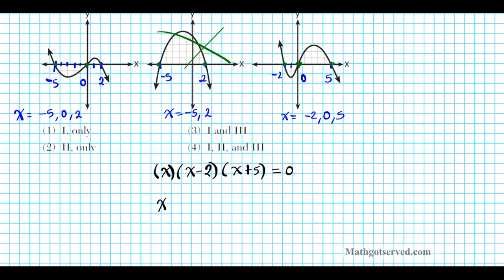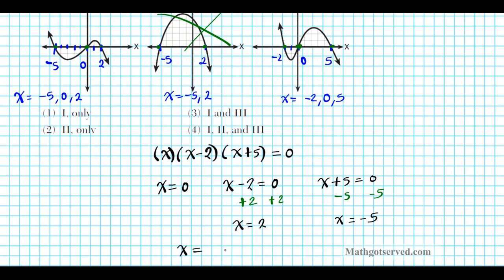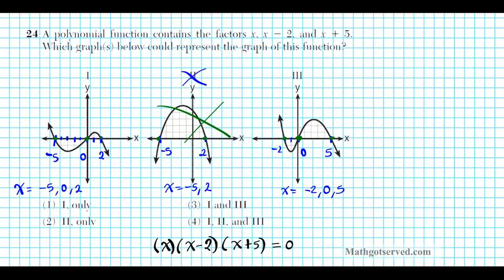So the roots in ascending order are negative 5, 0, and 2. That matches only with option number 1. Option 1 is our correct answer.